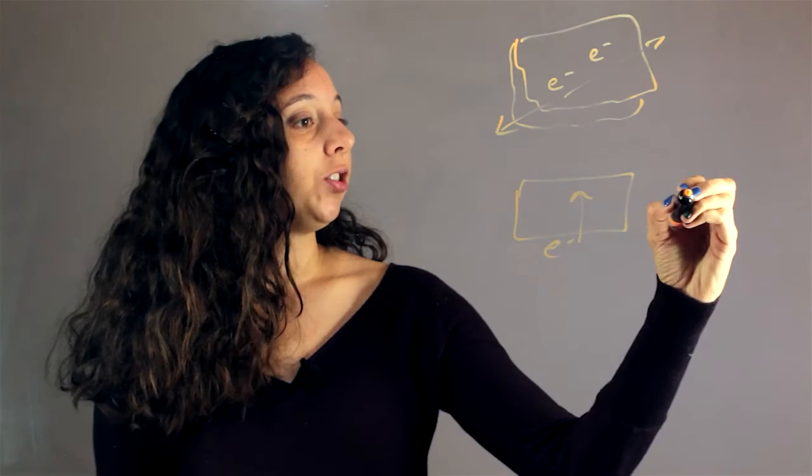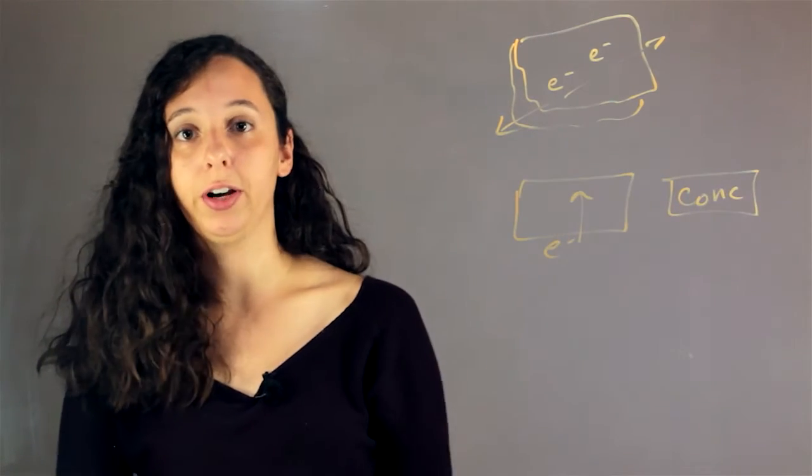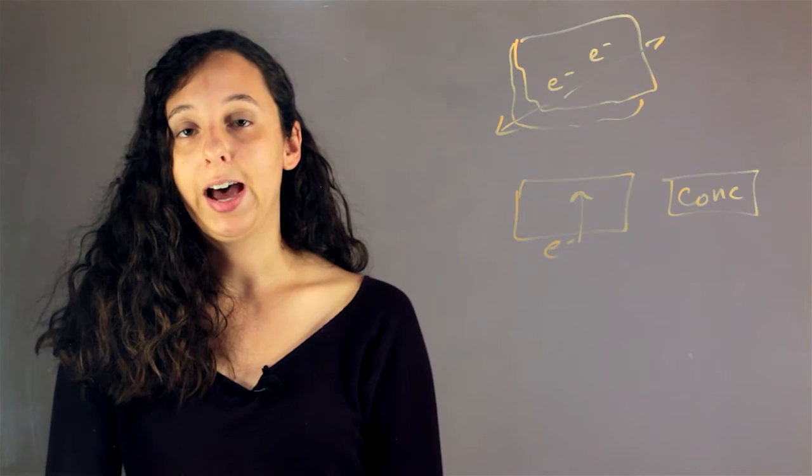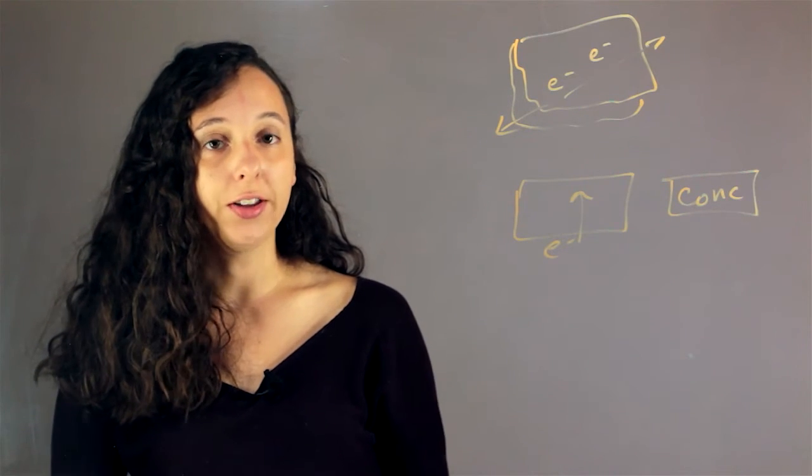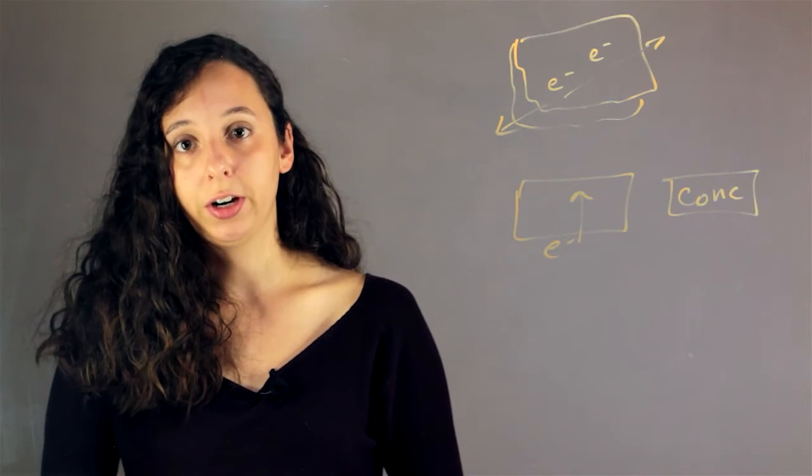And concentration is just how many of these electrons do we have in a certain area. So if something has a ton of electrons, it's going to have a really high concentration. If it only has a few, it's going to have a really low concentration.